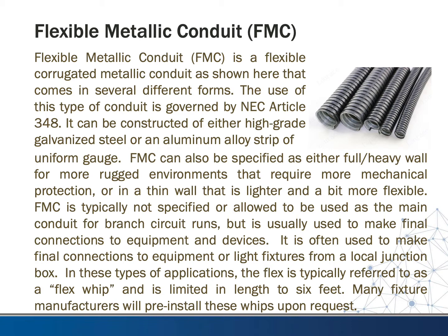Flexible metallic conduit, or FMC, is a flexible corrugated metallic conduit that comes in several different forms. Its use is governed by NEC Article 348. It can be constructed of either high-grade galvanized steel or an aluminum alloy strip of uniform gauge. FMC can be specified as either full or heavy wall for more rugged environments requiring more mechanical protection, or thin wall that is lighter and more flexible. FMC is typically not specified as the main conduit for branch circuit runs; it is usually used to make final connections to equipment, devices, or light fixtures from a local junction box. In these applications, the flex is typically called a 'flex whip' and is limited to six feet in length. Many fixture manufacturers will pre-install these whips upon request.